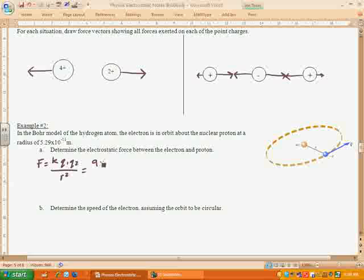So K is 9 times 10 to the 9th. If you don't believe me, just rewind. Go look at the K that I just had up there. Q1. Now it doesn't matter which one this is, but let's go ahead and do the electron first. Charge of an electron is 1.6 times 10 to the negative 19th. Now, I understand that it's a negative. It's a negative electron.